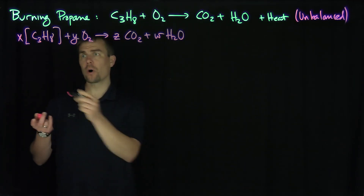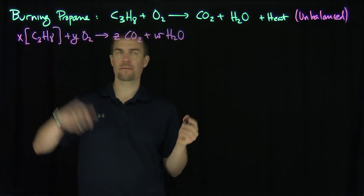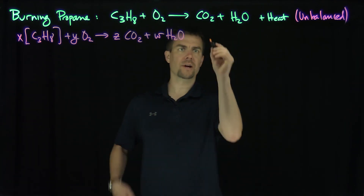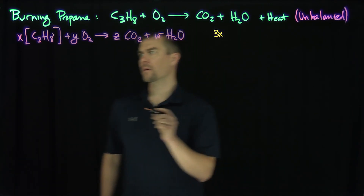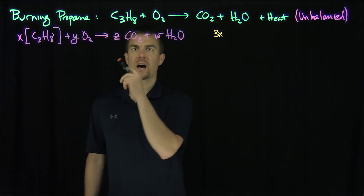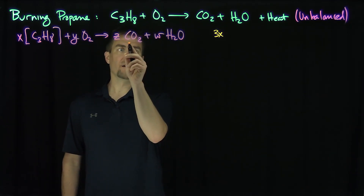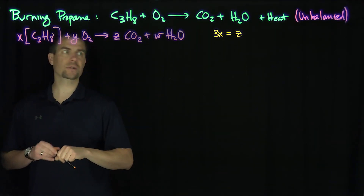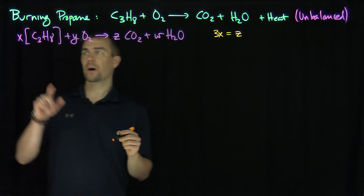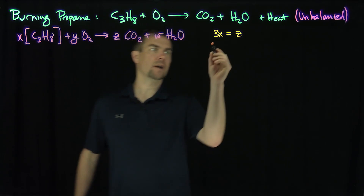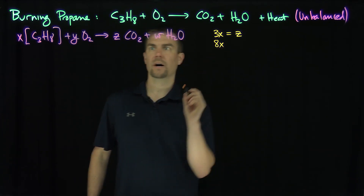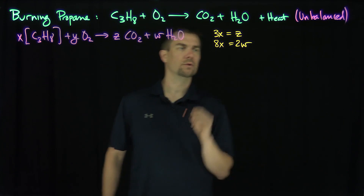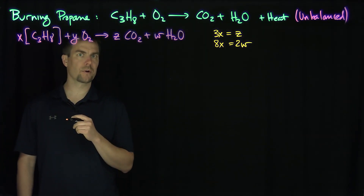Now we count all of these components. Let's count the carbons first. I have 3X carbons on the left side. How many carbons do we have on the right? We have Z carbons, so 3X has to be equal to Z. That's the carbon counting. Now counting hydrogens: there are 8X hydrogens on the left, and exactly 2W hydrogens on the right side of the equation.